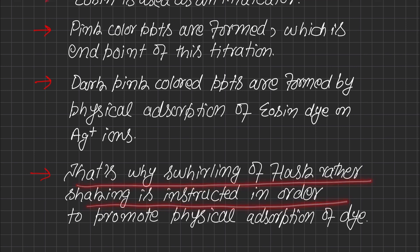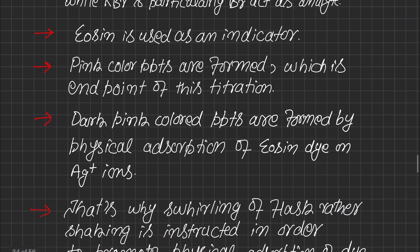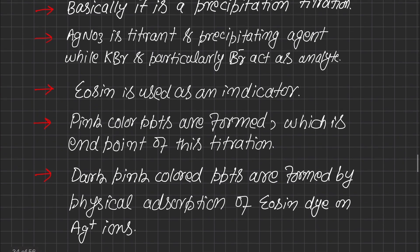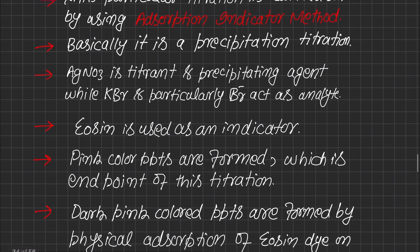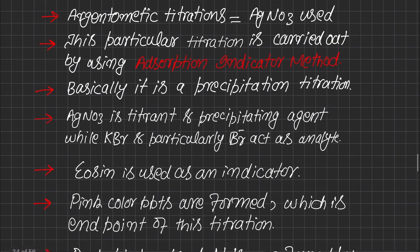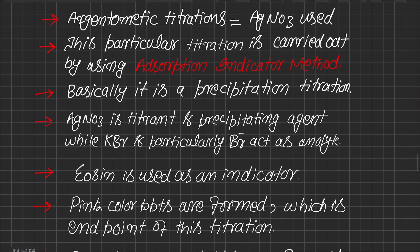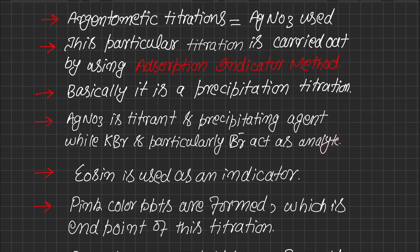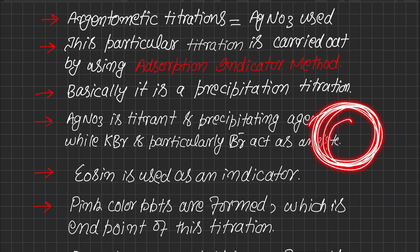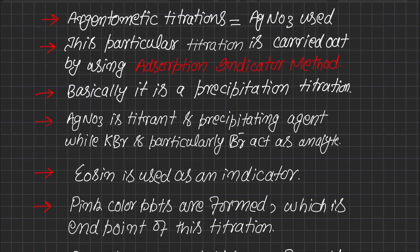Swirling of the flask rather than shaking is instructed in this titration in order to promote physical adsorption of the dye. Layers are formed during titration, and in order to promote these layers we do swirling of the flask. These layers promote physical adsorption of eosin dye on silver ions.